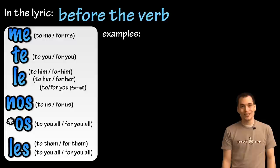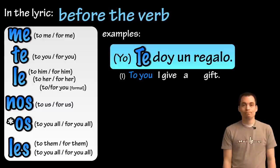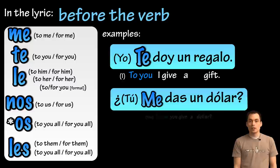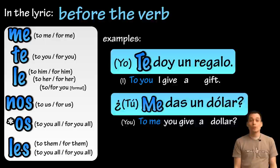Check out these examples and how backwards the order is when we compare Spanish to English. 'Te doy un regalo' would translate to 'to you I give a gift.' '¿Me das un dólar?' means 'to me you give a dollar.'